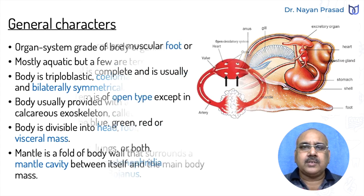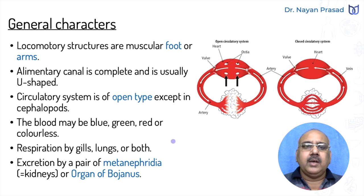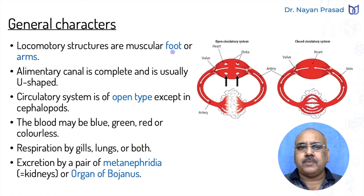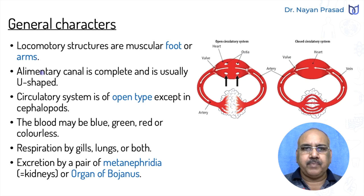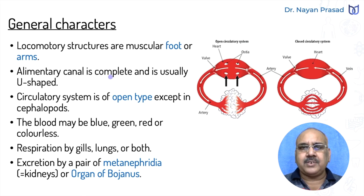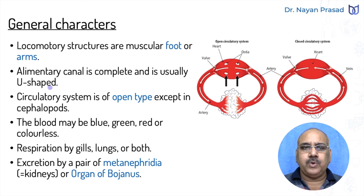Now, some other characters. In molluscs, locomotory structures are the muscular foot or arms. The presence of the foot in different regions is the basis for classification in molluscs. The alimentary canal is complete — from mouth to anus — all different structures are developed, and this alimentary canal is usually U-shaped.